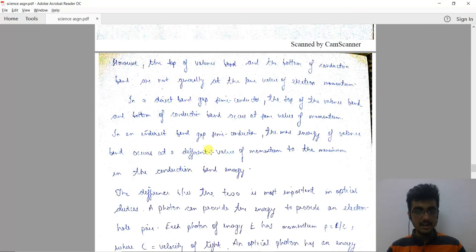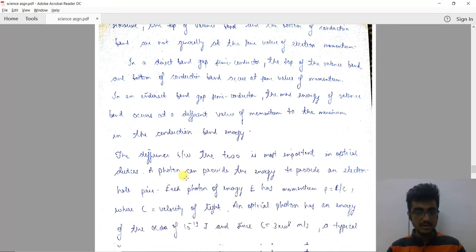In an indirect band gap semiconductor, the maximum energy of the valence band occurs at a different value of momentum than the minimum in the conduction band energy.